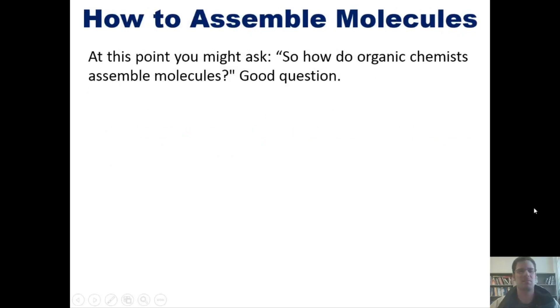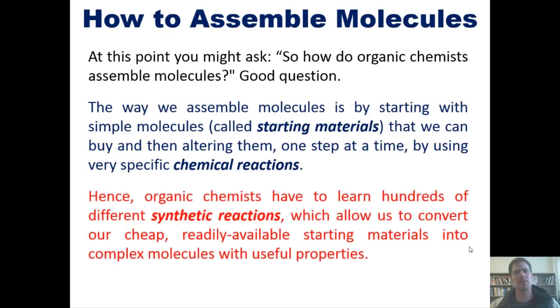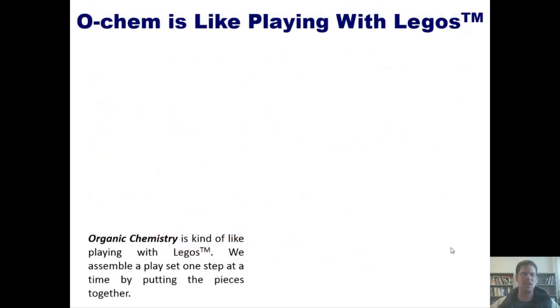Anyway, so at this point you might ask, 'How do organic chemists assemble molecules? I mean, molecules are tiny. How do you do that?' That's a good question. The way we assemble molecules is by starting with simple molecules, which we often call starting materials that we can buy, and then alter them one step at a time by using very specific chemical reactions. Hence, organic chemists have to learn hundreds of different synthetic reactions which allow us to convert our cheap, readily available starting materials into complex molecules with useful properties.